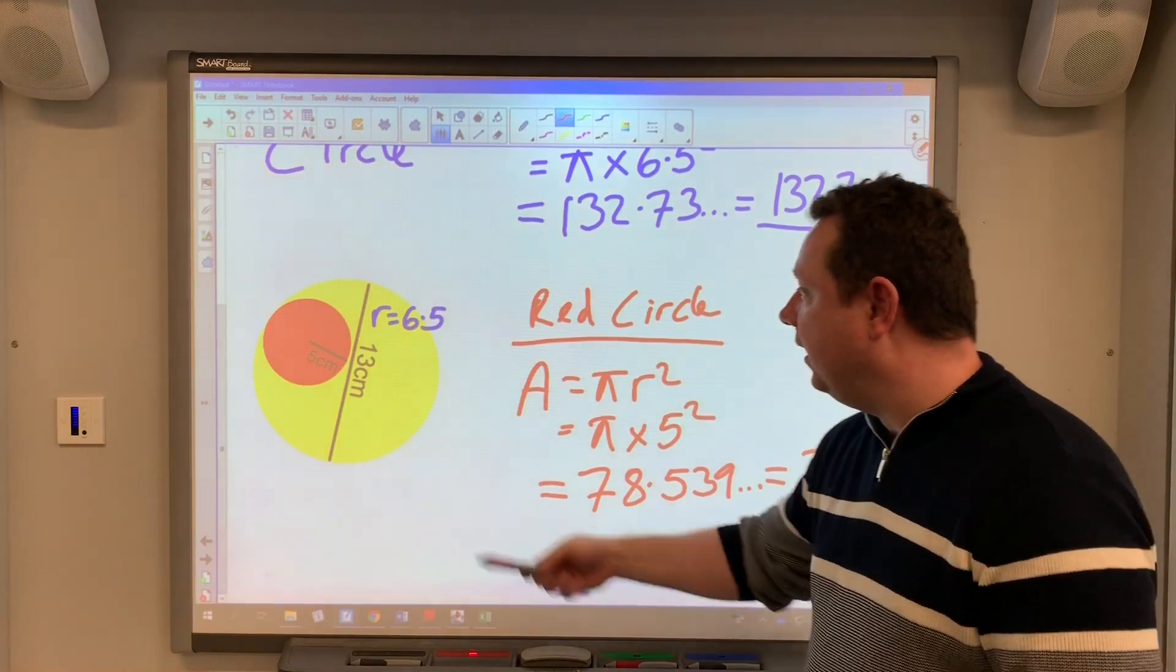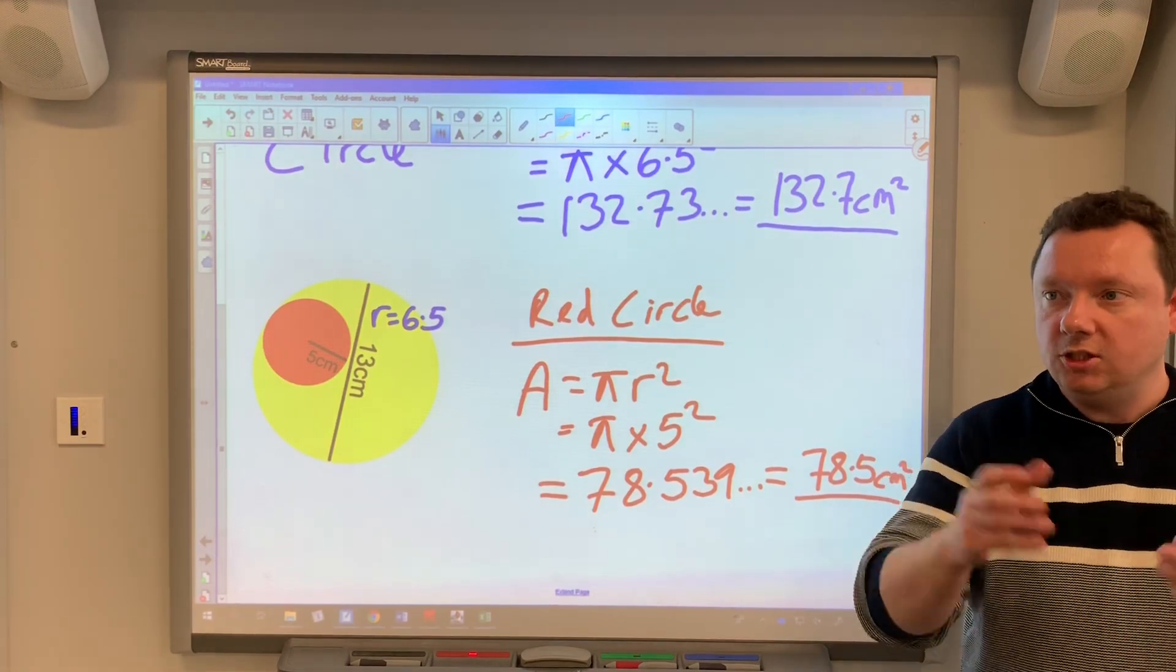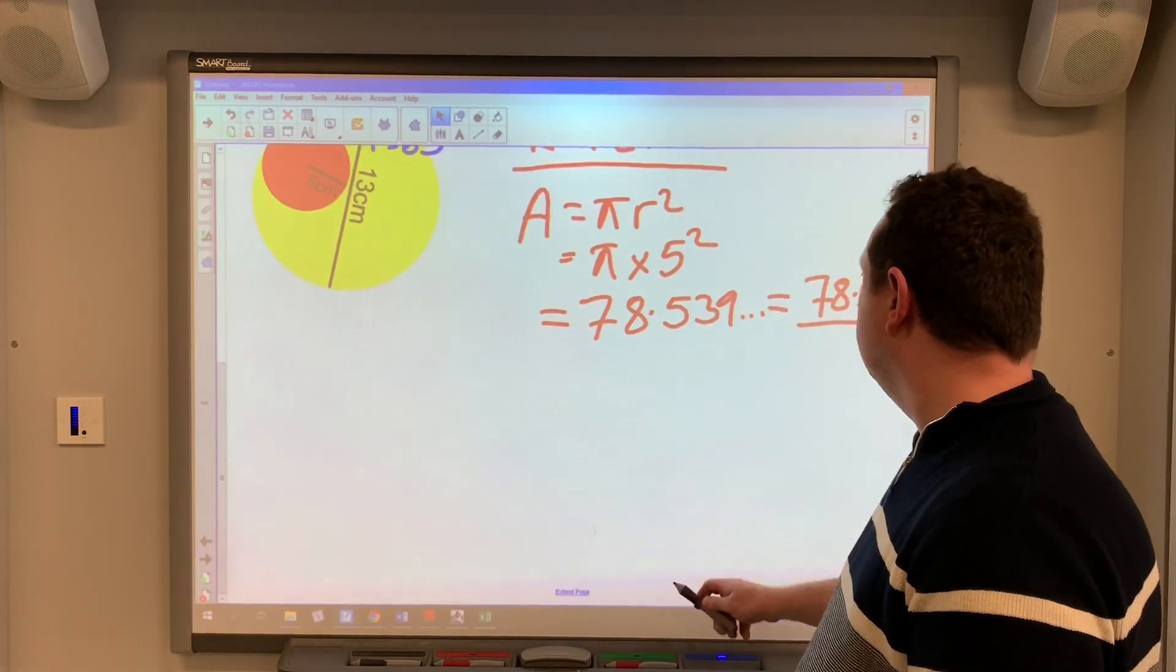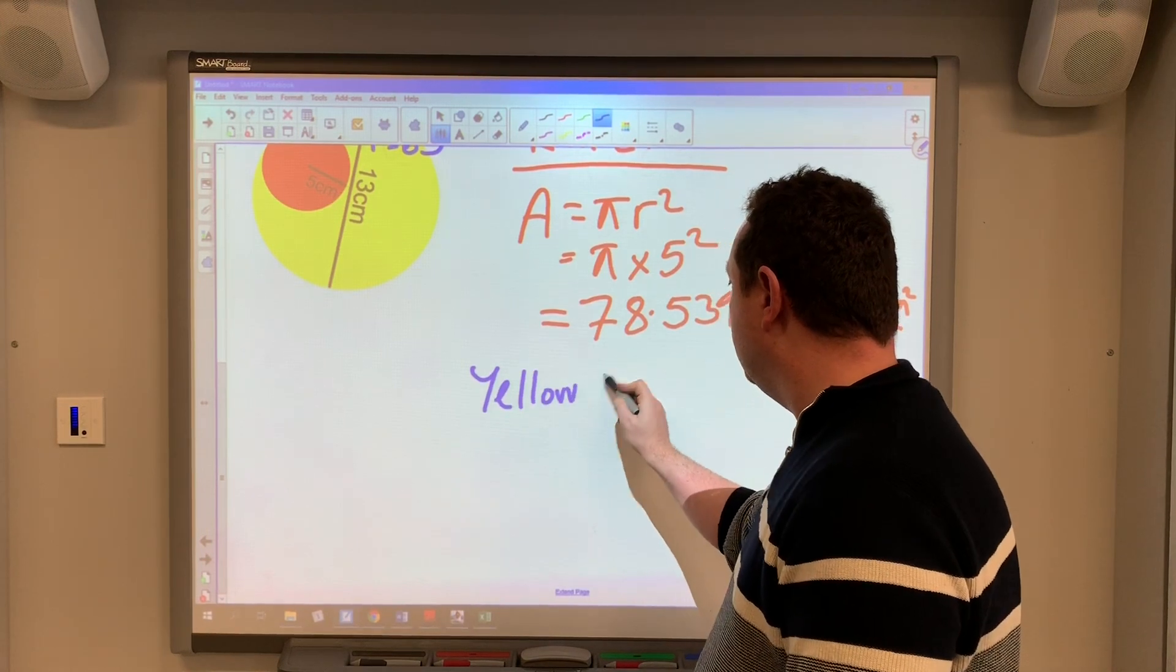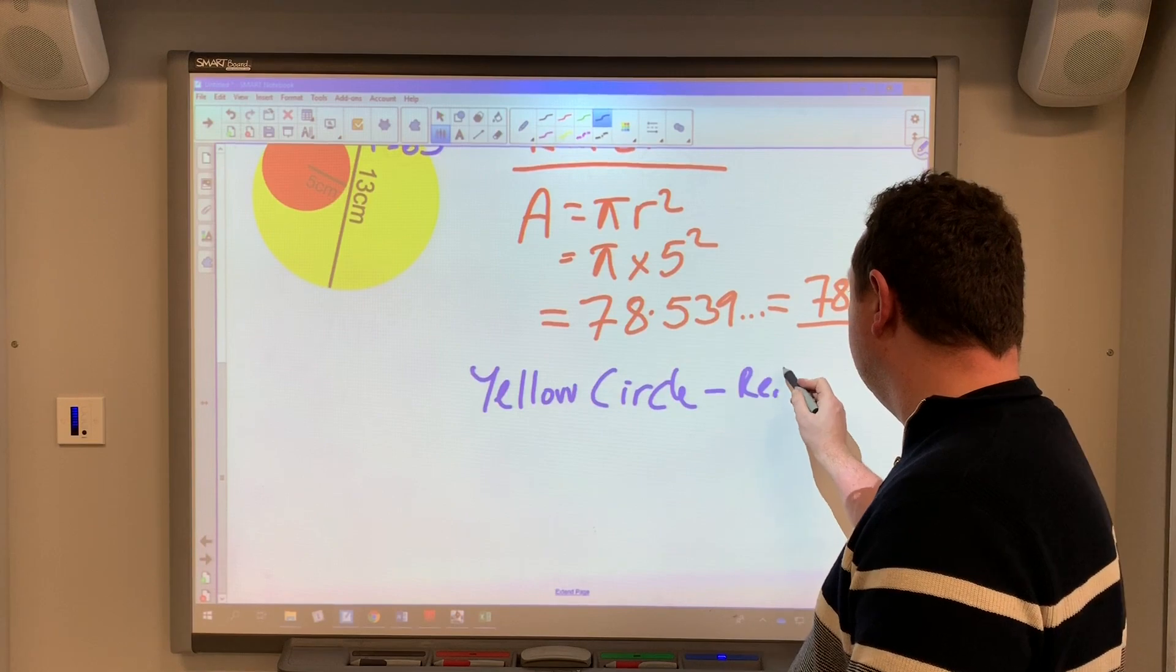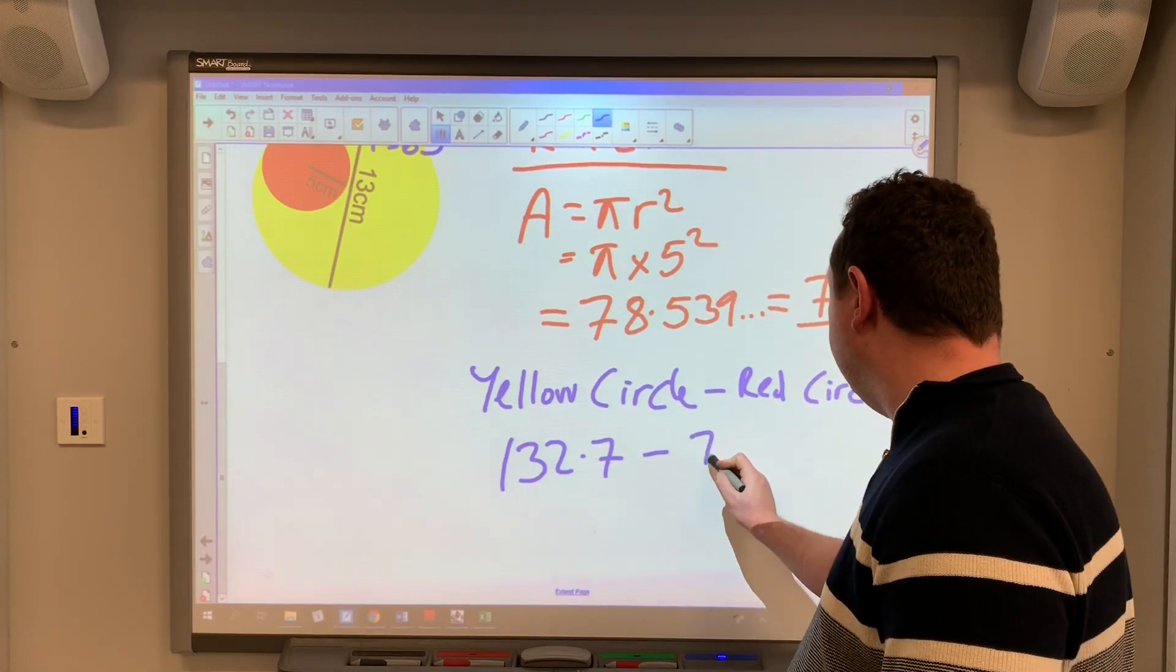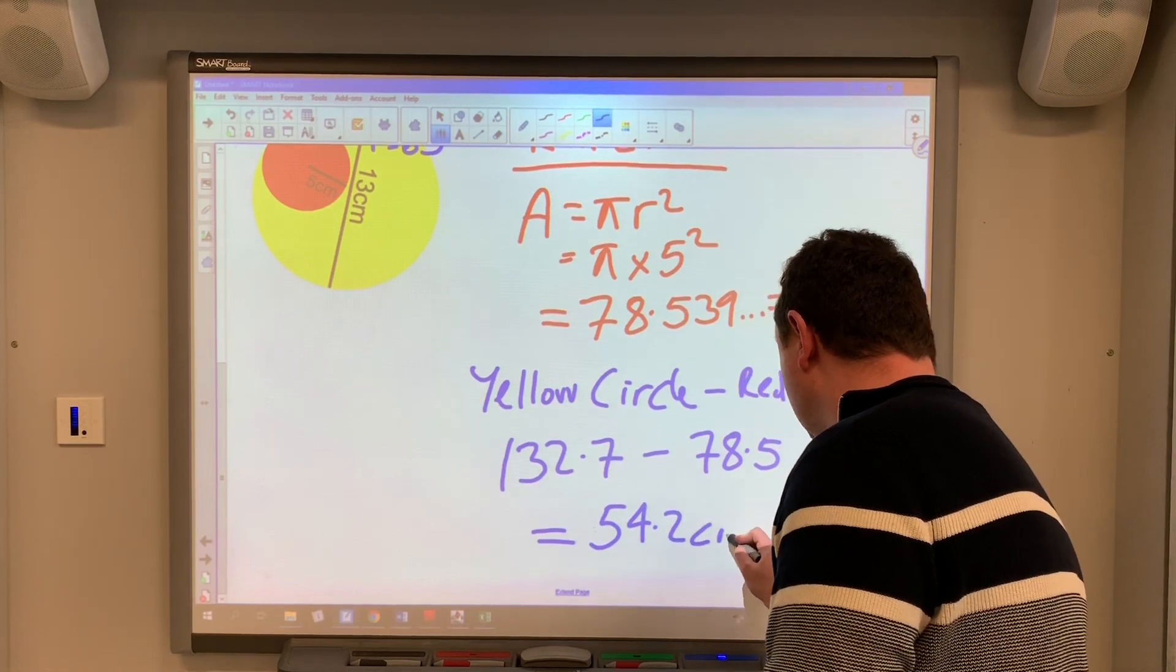So now since I've got the yellow circle and the red circle, if I take the yellow and the red away from each other, that'll leave me just the yellow section, which is what I'm looking for. So doing that, I've got the yellow circle minus the red circle. My two answers were 132.7 minus 78.5 centimeters squared.